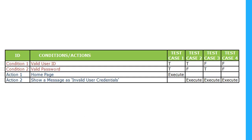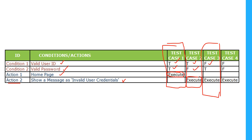Here I have two conditions and two actions. Condition 1 is enter valid user ID, condition 2 is enter valid password. Action 1 is go to the home page, action 2 is show an error message. Test case 1: user ID is valid and password is valid — execute action 1, go to home page. Test case 2: user ID is valid but password is invalid — execute action 2. Test case 3: user ID is invalid but password is valid — execute action 2. Test case 4: both user ID and password are invalid — execute action 2.